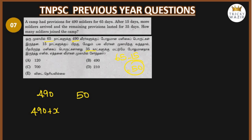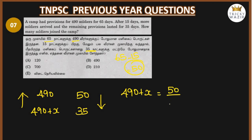The remaining provisions last 35 days with the added soldiers. Since the number of days decreased as soldiers increased, this is inverse proportion. So we get: 490 plus X equals 50 divided by 35 into 490.